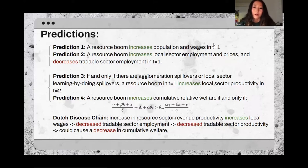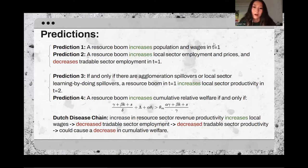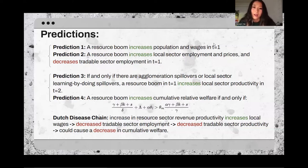Prediction 3 says that if and only if there are agglomeration spillovers or local sector learning by doing spillovers, a resource boom today increases local sector productivity tomorrow. Prediction 4 says that a resource boom increases welfare if and only if a certain equation holds. Relative welfare is more likely to increase under several conditions: if the social planner is less patient (delta is small), then growth during the boom in period 1 can outweigh losses in period 2; if agglomeration spillover lambda is large, county A benefits more from population increase during the boom; if local sector learning by doing theta 1 is strong or local good expenditure share alpha is large, county A benefits more from increased local sector learning by doing in period 2; and if tradable sector learning by doing theta M is weak, the sector's contraction in period 1 has smaller negative consequences in period 2.